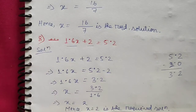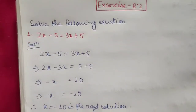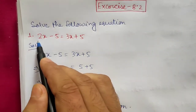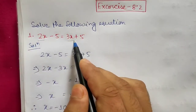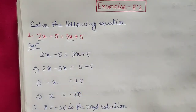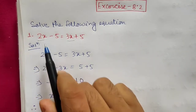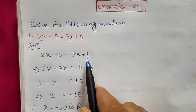Now we move to Exercise 8.2. In this exercise, we solve equations that have variables on both sides — a variable on the left hand side and another variable on the right hand side. We will again use the transposing method, bringing all variables to one side and all constants to the other side.